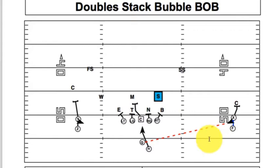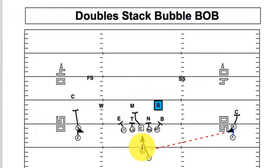Our next play is Double Stack Bubble Bob — Bob stands for 'Big on Big,' which refers to the protection. This is a quarterback bubble RPO. When the quarterback comes to the line, he has two sides to look at: the front side — because he's a right-handed quarterback — and the back side, which is a pre-snap RPO.